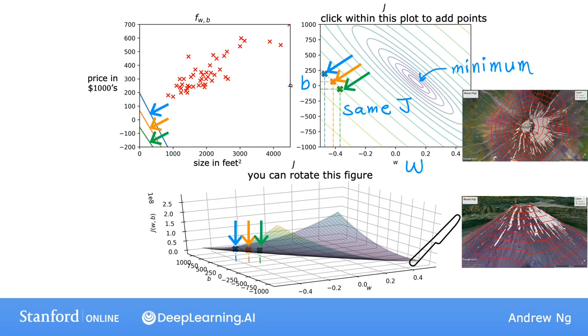like that, so that each of these ovals have the same height above your screen, and the minimum of the bowl is right down there, in the center of the smallest oval.